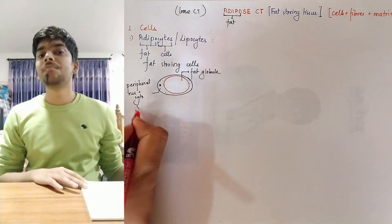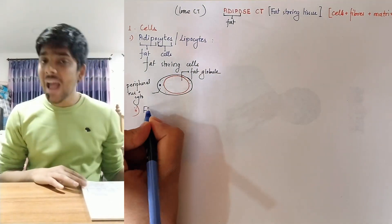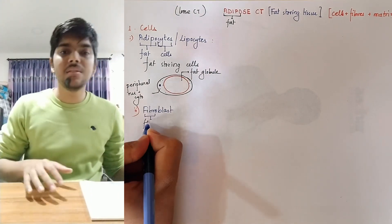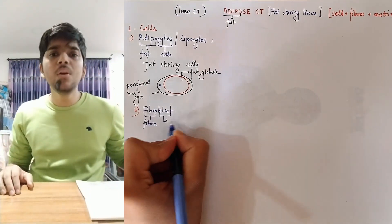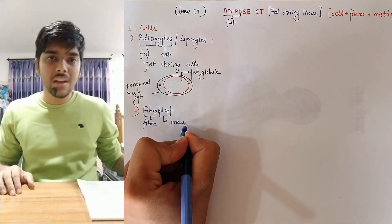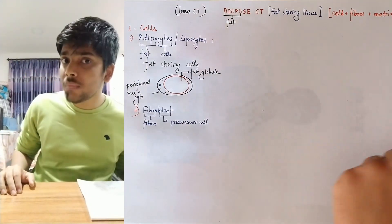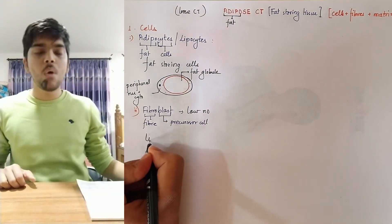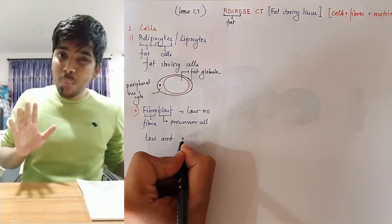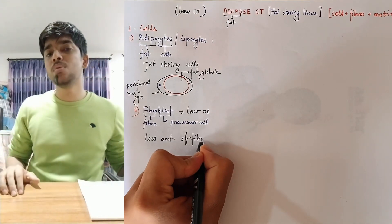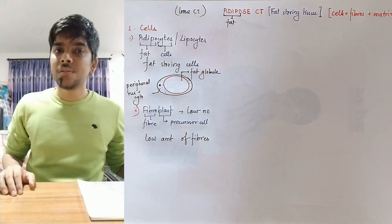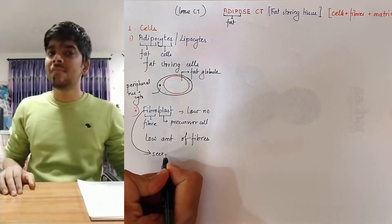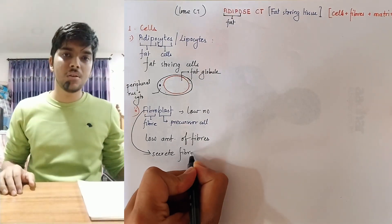Second is fibroblast, where fibro means fiber and blast means precursor cell. So these are fiber secreting cells. These are found in very few numbers in adipose connective tissue. Since they are found in very low numbers, the fibers as well are found in very low amounts. Because the most important function of adipose connective tissue is to store fat, a large number of fat storing cells are found instead of fiber making cells and fibers.